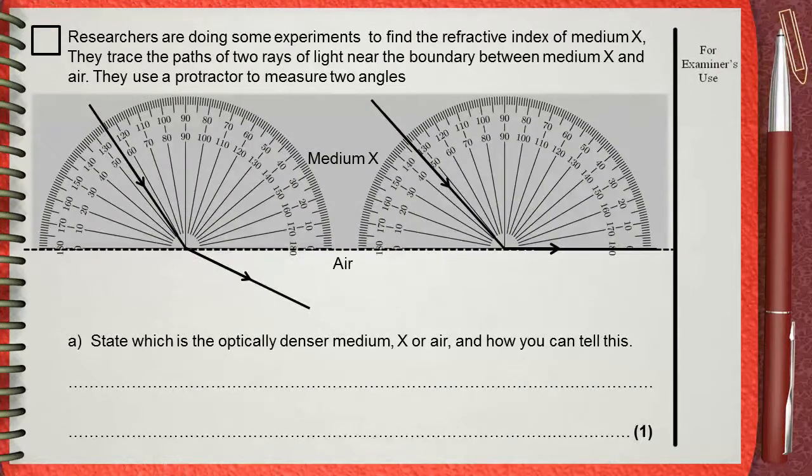Researchers are doing some experiments to find the refractive index of medium X. They trace the path of two rays of light near the boundary between medium X and air. They use a protractor to measure two angles. Part A: State which is the optically denser medium, X or air, and how you can tell this.